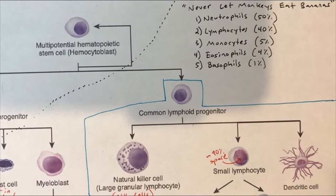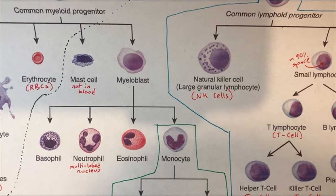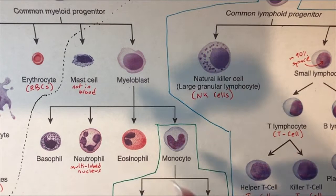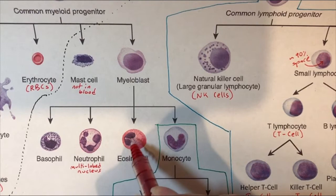Let's go to eosinophils. You can tell that something is an eosinophil under a microscope based on its nucleus — kind of like with the neutrophil, where you could tell it was a neutrophil because of its multi-lobed nucleus. The eosinophil has a bi-lobed nucleus — bi-lobed, so two lobes.